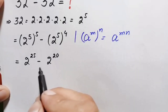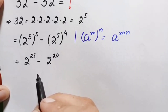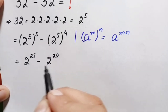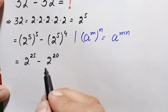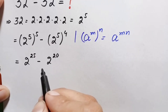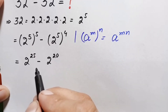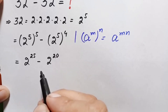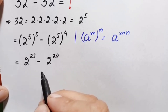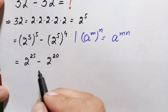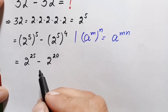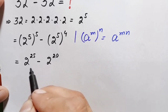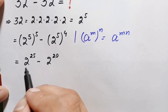We can solve this further using two methods. The first method is to find the values of 2 raised to power 25 and 2 raised to power 20 separately and subtract. The second method is to take out the factor 2 raised to power 20 as common from both terms and then simplify. We will use the second approach.